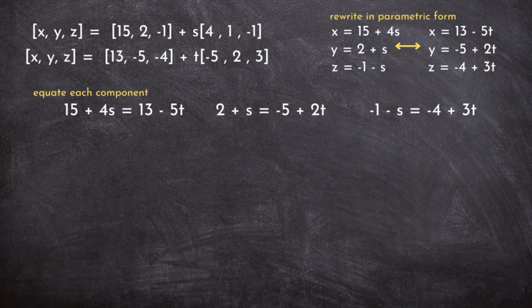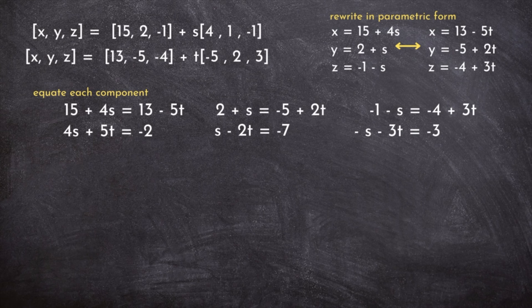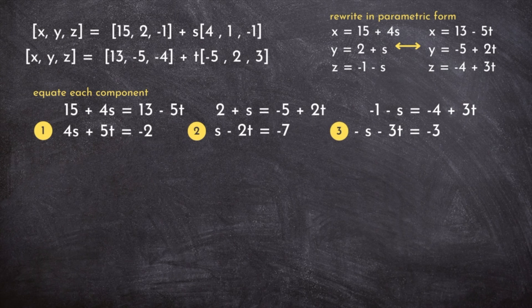We've got each set of parametric equations set equal to each other. Next we'll clean them up by bringing all s and t terms to the left side and anything without s and t to the other. I'll label the resulting equations 1, 2, and 3 because we're about to start doing stuff with these new equations.